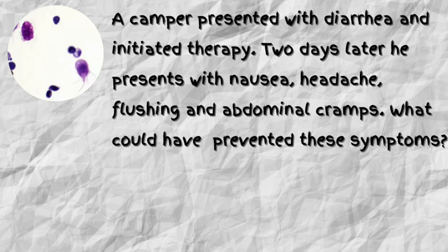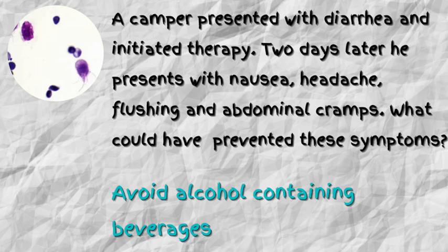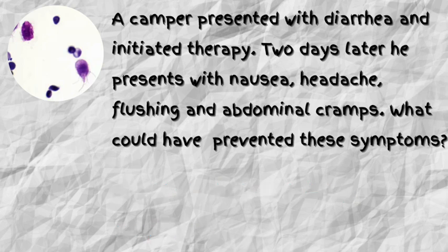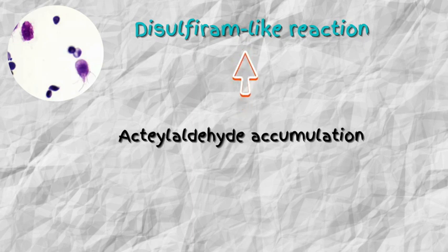To answer this question, you have to know the diagnosis, how it is treated, and possible side effects or interactions of the medication. The answer is avoiding alcohol-containing beverages. This is a classic presentation of a camper with diarrhea — think Giardia. After starting metronidazole therapy, the patient develops abdominal cramps, nausea, headache, and flushing — think a disulfiram-like reaction seen in patients treated with metronidazole who consume alcohol. This occurs due to acetaldehyde accumulation.